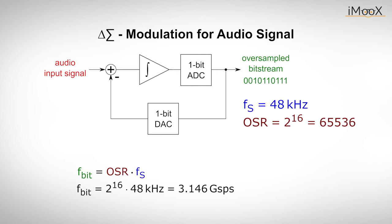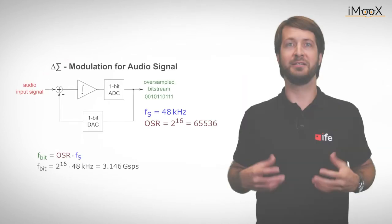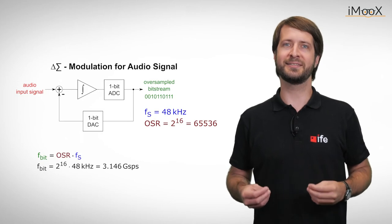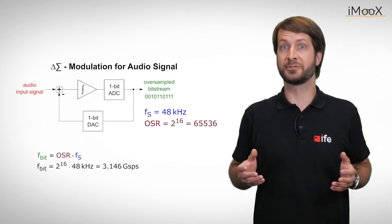According to this logic, we would have to oversample by 2 to the power of 16 to achieve a 16-bit conversion, which would require a sampling rate of about 3 GHz. In fact, Delta-Sigma ADCs are doing much better, so what's really going on?